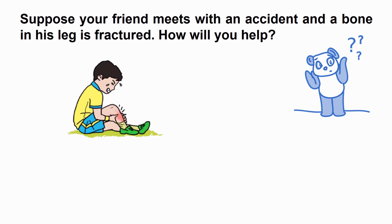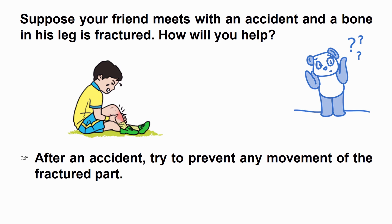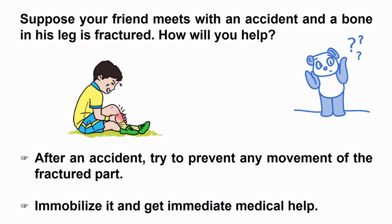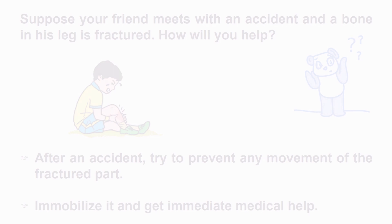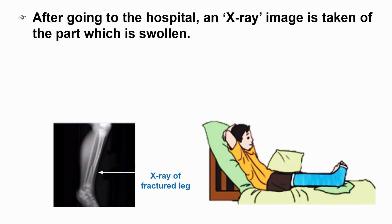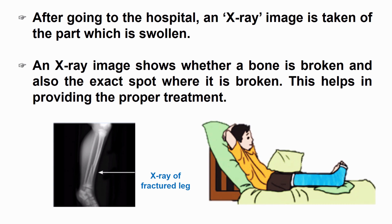Suppose your friend meets with an accident and a bone in his leg is fractured. How will you help? After an accident, try to prevent any movement of the fractured part. Immobilize it — that means do not move the fractured part of the body — and get immediate medical help. After going to the hospital, an X-ray image is taken of the swollen part. An X-ray image shows whether a bone is broken and also the exact spot where it is broken. This helps in providing the proper treatment.